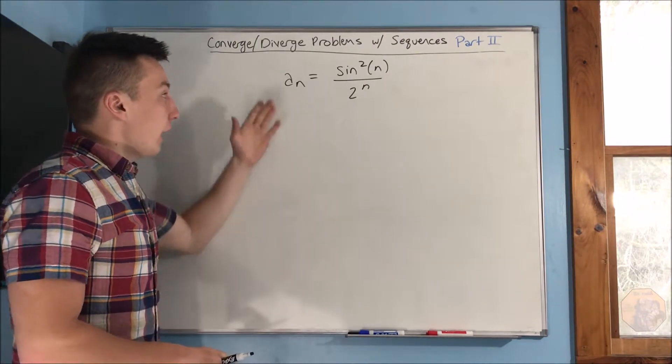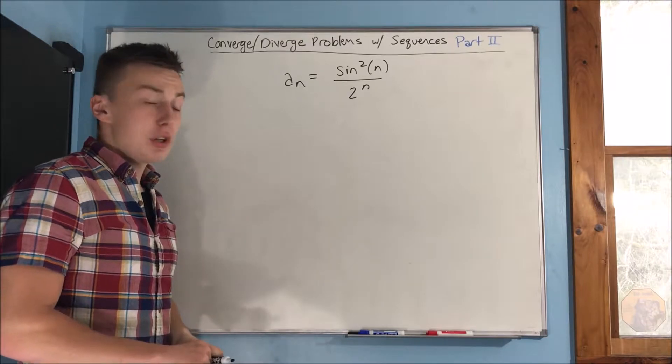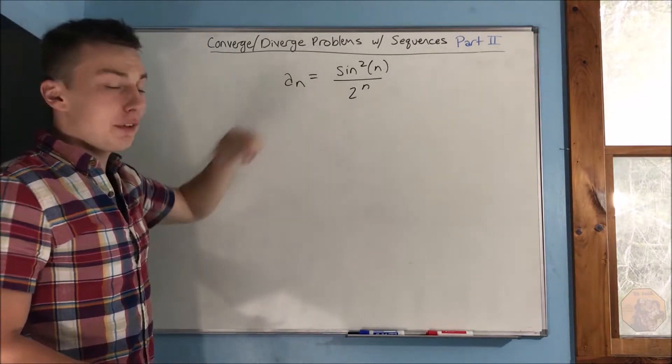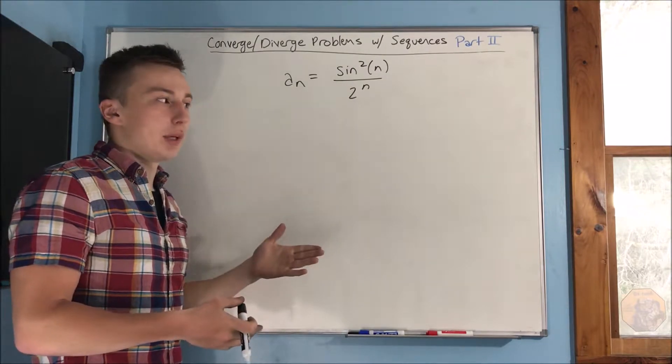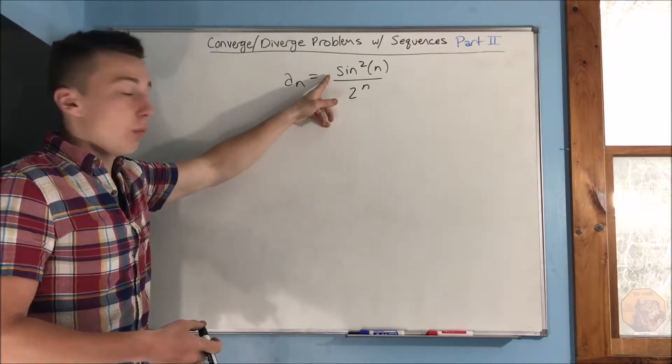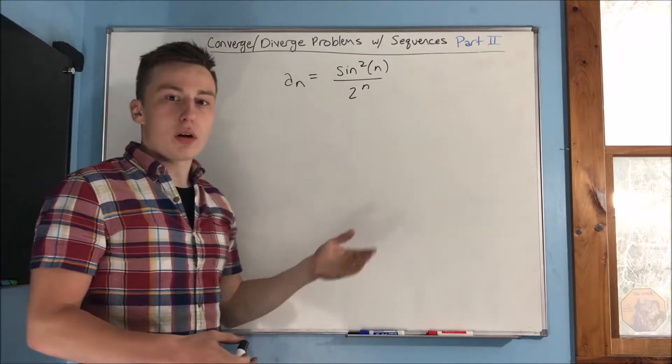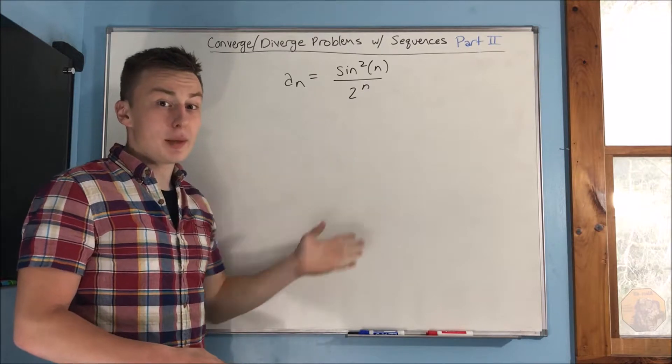So we have our last problem up on the board here. A sub n equals sine squared n over 2 to the n. Now, what do we know about this? Well, we have a trig function here and that means it's going to just be oscillating up and down. But for what values? For sine squared n, well, that's going to be between 0 and 1, right? And this 2 to the n here, well, that's just going to become infinitely large.